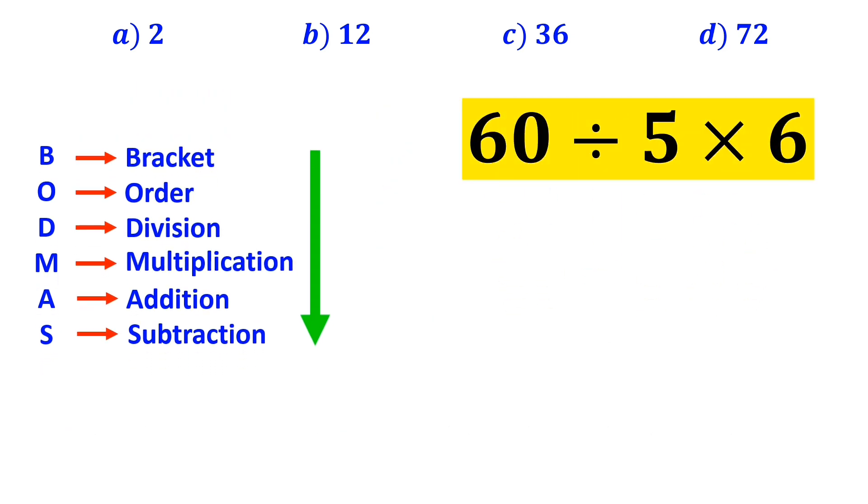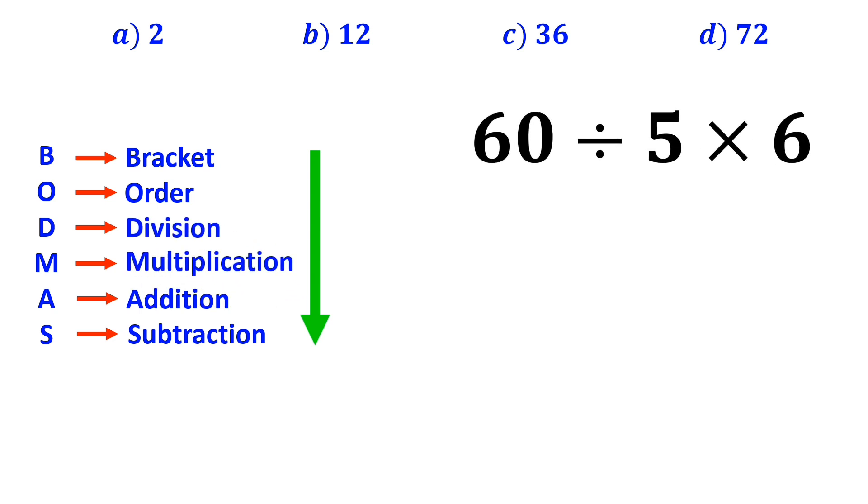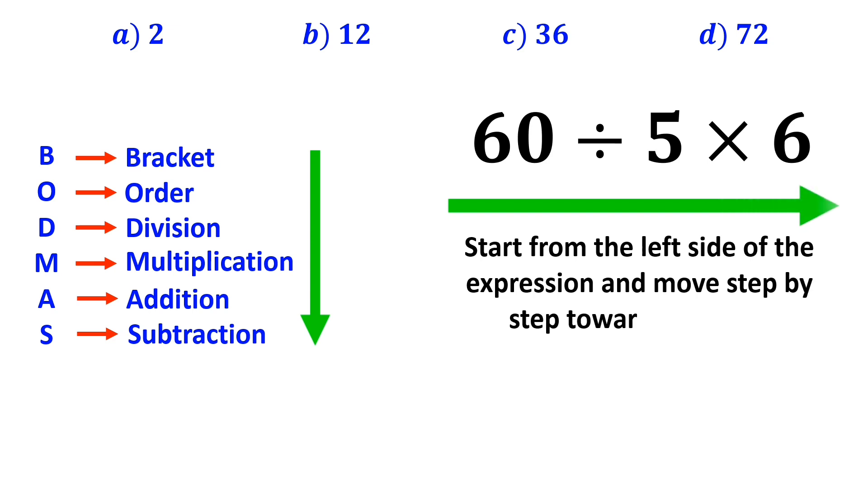Now, it's time to simplify this expression. It's very important to note that in the BODMAS rule, multiplication and division have exactly the same level of priority. In this case, all we need to do is to start from the left side of the expression and move step by step toward the right.